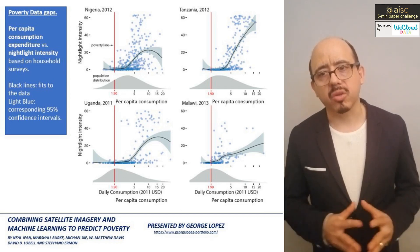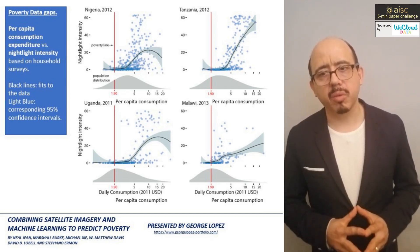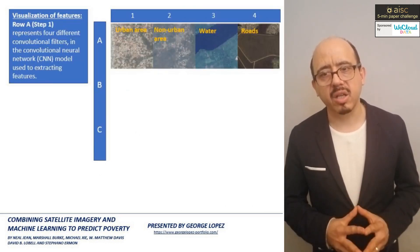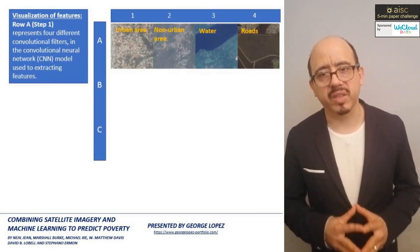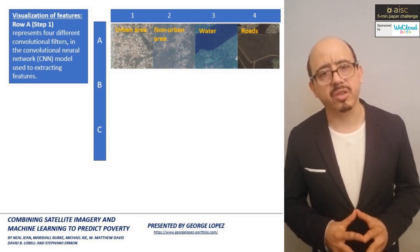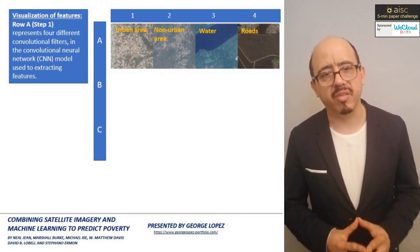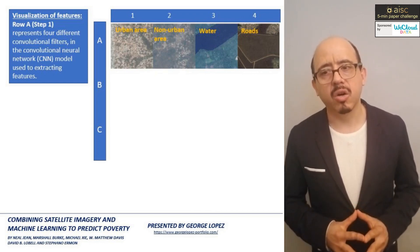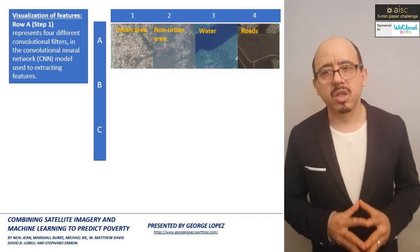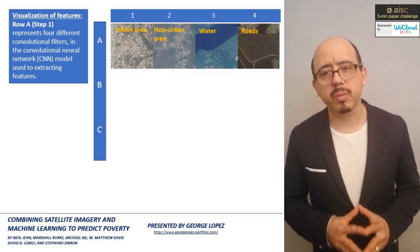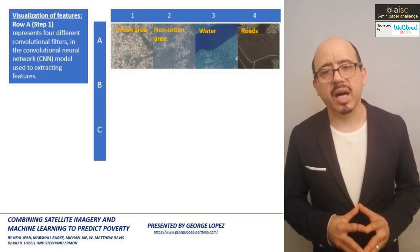What does their method consist of? It involves three phases. Phase one: they train the CNN to learn features from daylight satellite imagery. These features include evidence of economic activity or lack thereof, such as urban areas, non-urban areas, water, and roads.